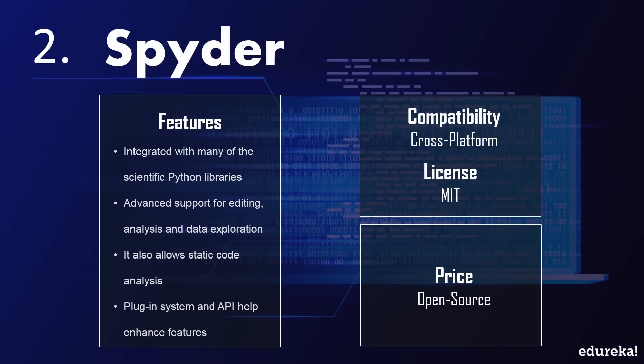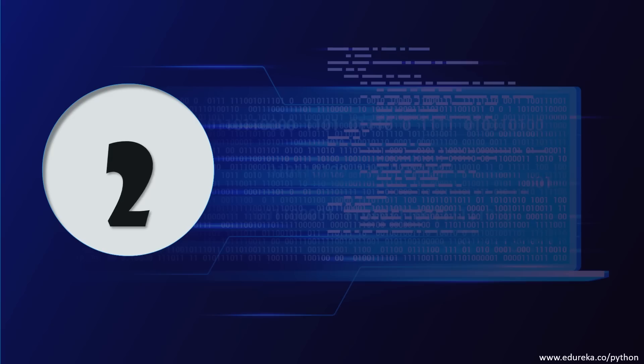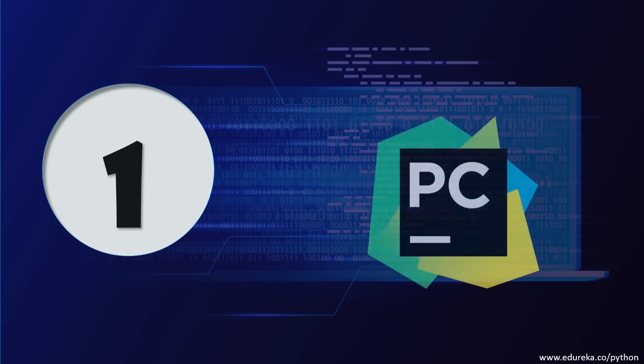At number 2 is Spyder. Spyder is an open source cross-platform IDE designed mainly for data analysis and scientists. It is considered a powerful scientific development IDE written in Python. Spyder is integrated with many scientific Python libraries such as SciPy, NumPy, Matplotlib, and Pandas. It provides advanced support for editing, analysis, and data exploration, allows static code analysis without executing the code, and its features can be expanded through a plugin system and API.